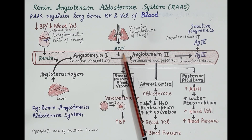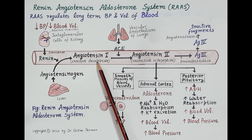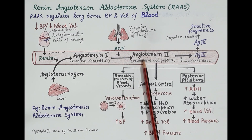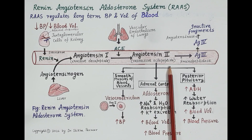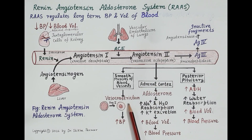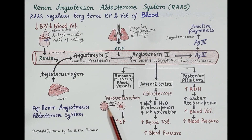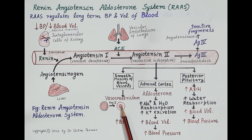ACE converts Angiotensin 1, which is inactive, to Angiotensin 2. Angiotensin 2 is a vasoactive octapeptide — active and made up of eight amino acids. It is a very potent vasoconstrictor: it constricts blood vessels, narrows the lumen, and this vasoconstriction increases blood pressure.